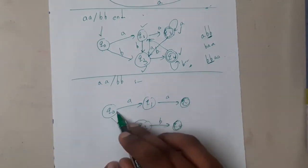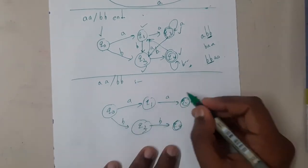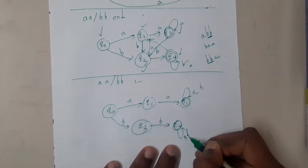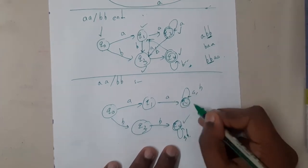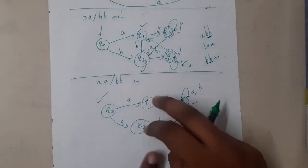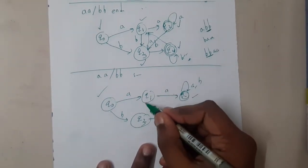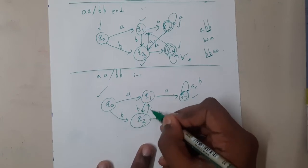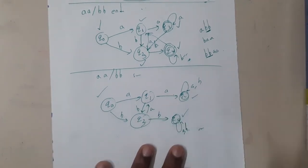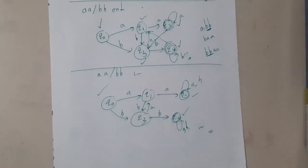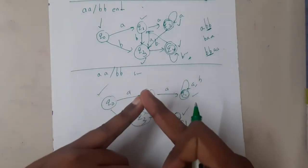Once I find 'aa' or 'bb', if I find anything else there is no restriction — both final states have self-loops and are completely done. Now we are only left with q0: if suddenly 'b' comes I go down; if suddenly 'a' comes I go up. That is the complete diagram — quite easy.